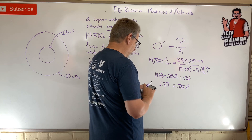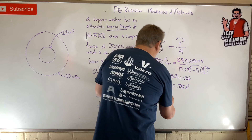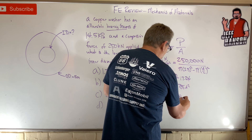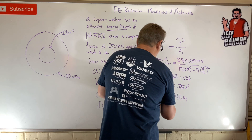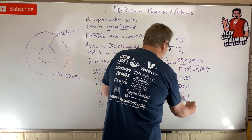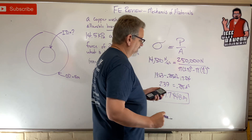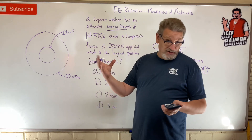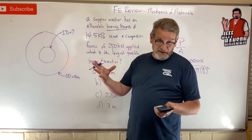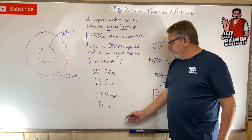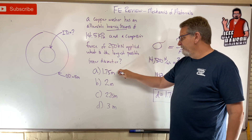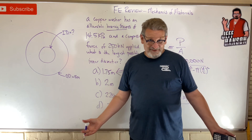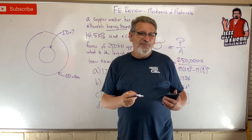Dividing 2.39 by 0.785 and taking the square root gives d equals 1.7448 meters — that's your largest possible inner diameter. If the inner diameter is any bigger than that, the area gets smaller and the stress exceeds the allowable limit. There's your answer!